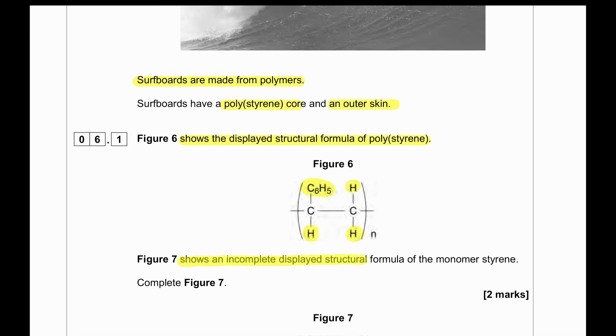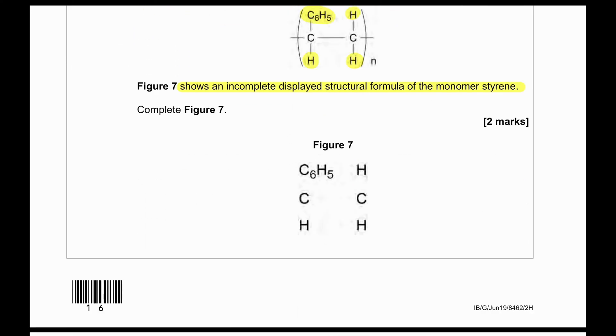Figure 7 shows an incomplete displayed structure formula of the monomer styrene. To get a monomer from a polymer it's very easy - break the two bonds and put the double bond in between. We're going to put two carbon bonds between the two carbons and establish single bonds with the rest of the molecule, making four bonds on each carbon. Carbon has four bonds, you cannot have any more.